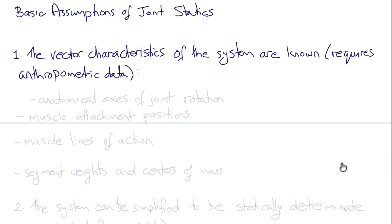This requires anthropometric data, measurements on anatomic properties such as the anatomical axes of joint rotation, muscle attachment positions and tendon attachment positions, and muscle lines of action.